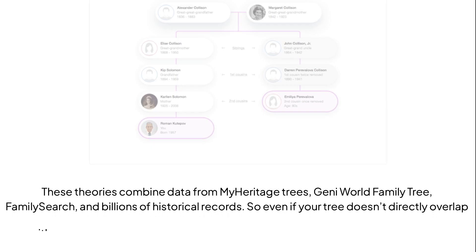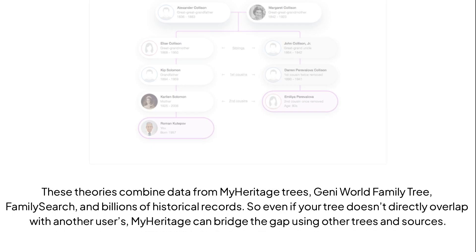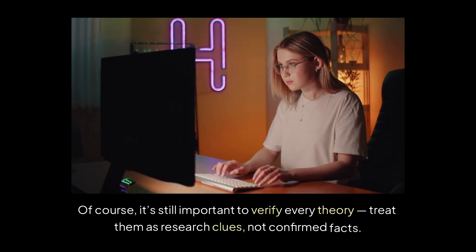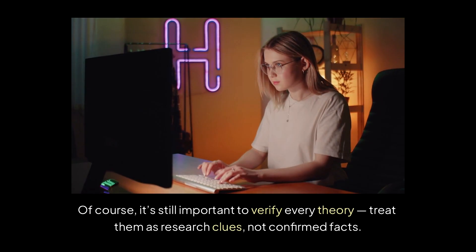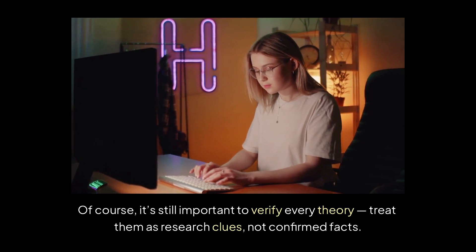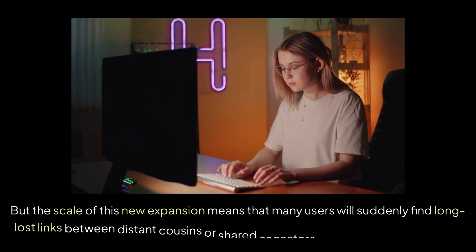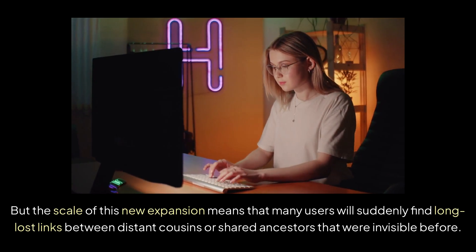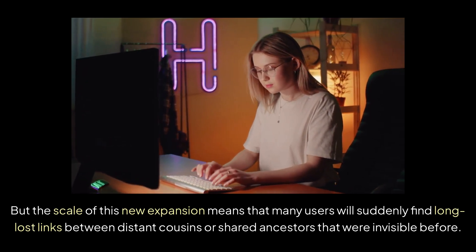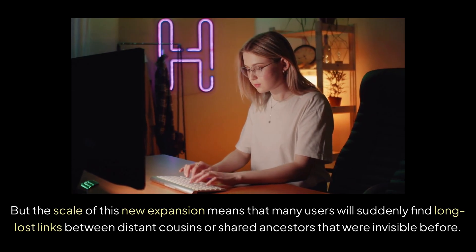These theories combine data from MyHeritage trees, Geni World Family Tree, FamilySearch, and billions of historical records. So even if your tree doesn't directly overlap with another user's, MyHeritage can bridge the gap using other trees and sources. Of course, it's still important to verify every theory — treat them as research clues, not confirmed facts. But the scale of this new expansion means that many users will suddenly find long-lost links between distant cousins or shared ancestors that were invisible before.